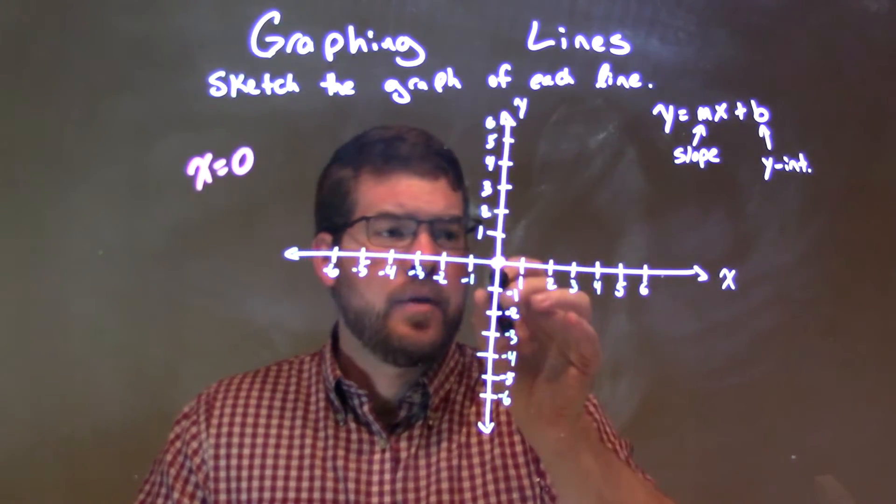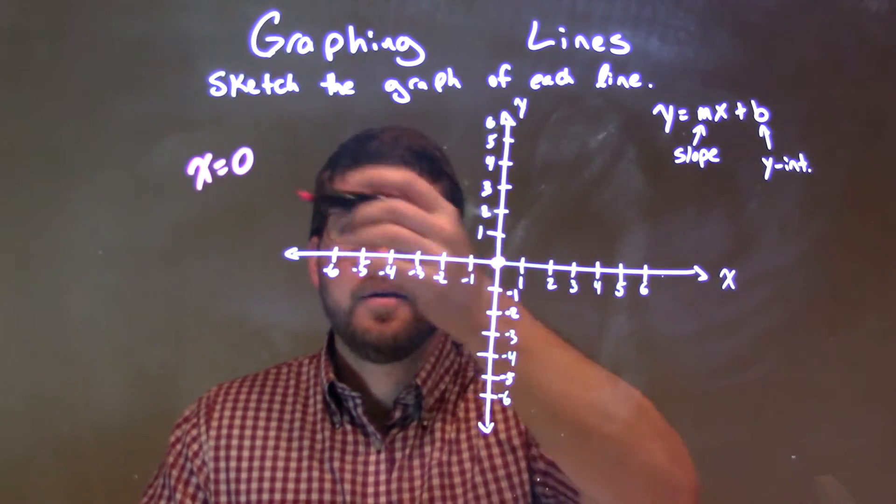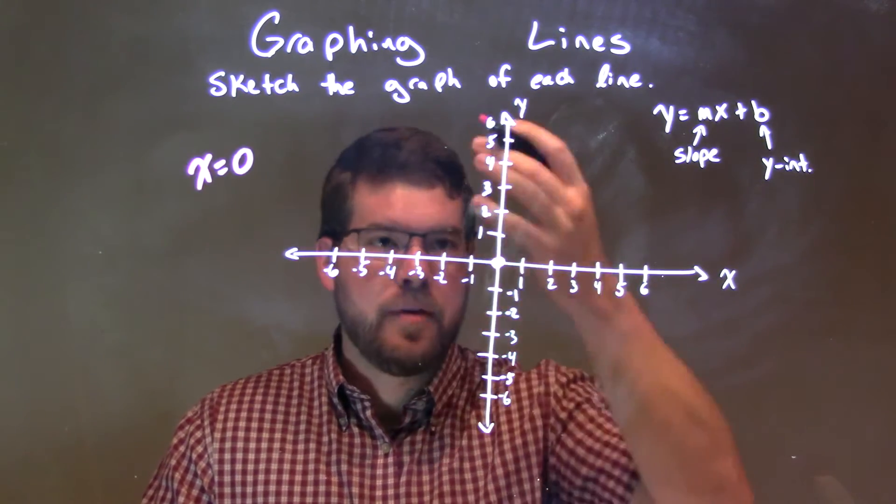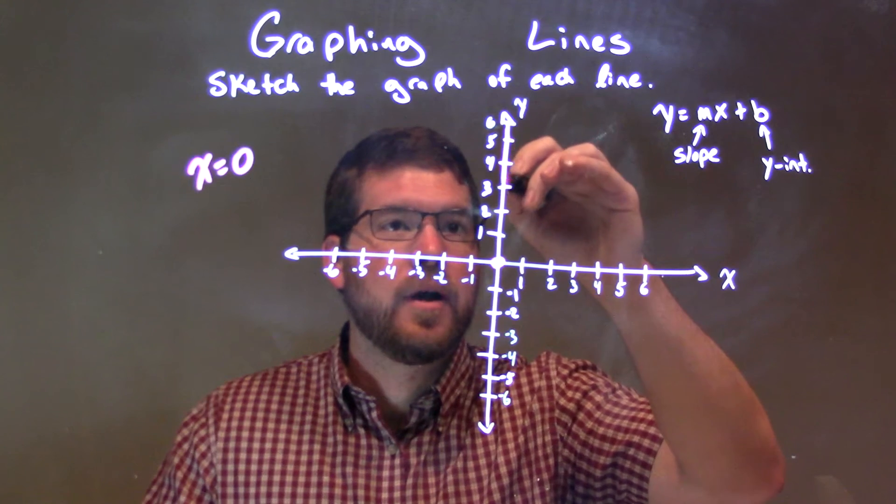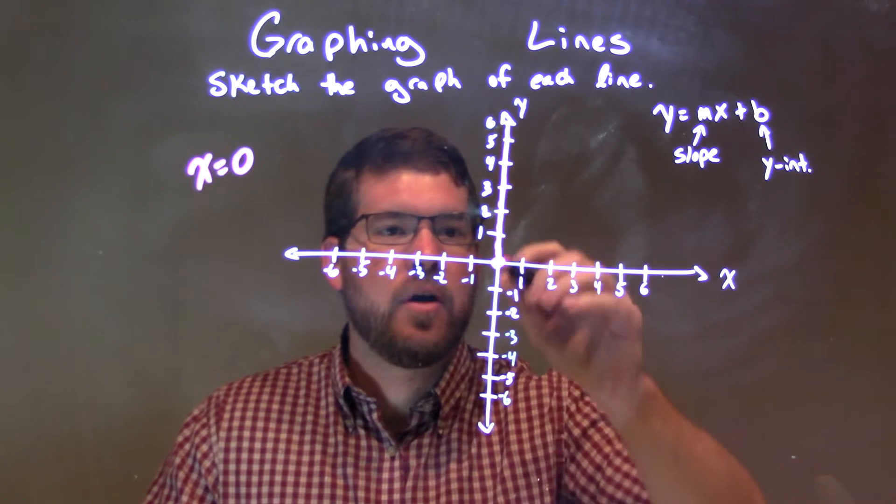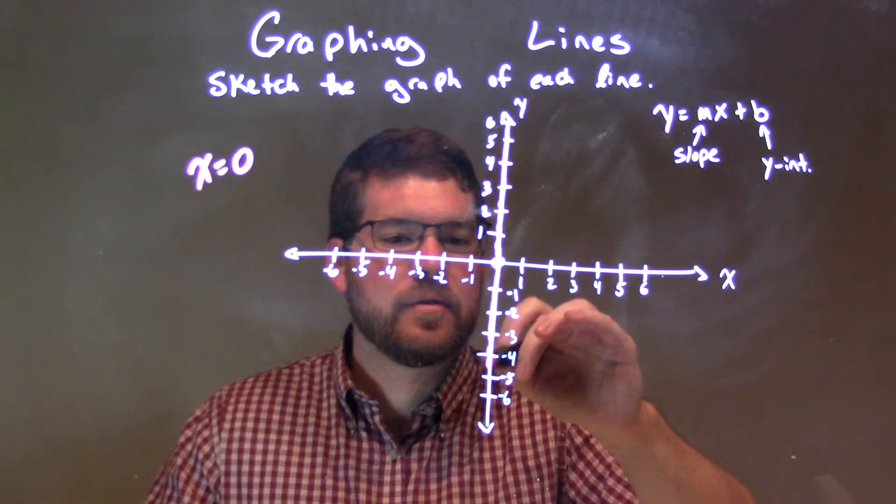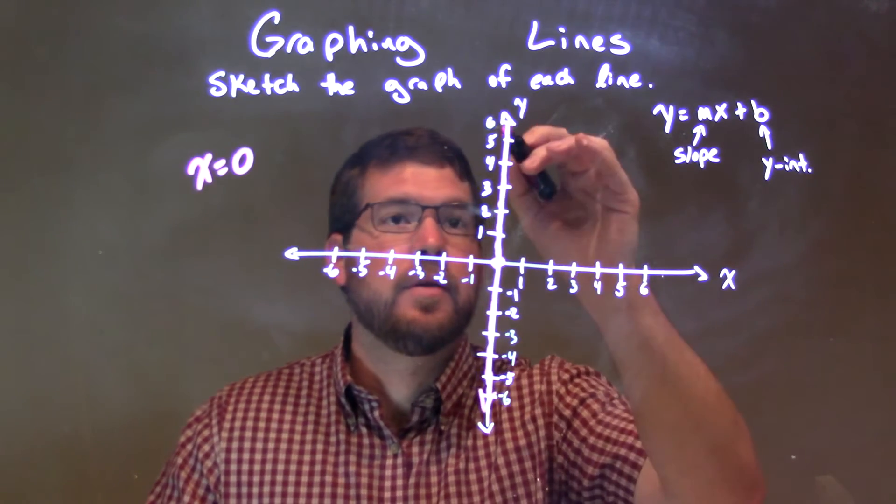we have our x-value being 0. We need to draw a vertical line, because when x equals a number, it's a vertical line. So draw a vertical line through the axis, so it stays on basically the y-axis, or it is basically the y-axis.